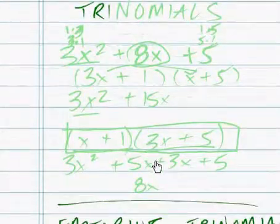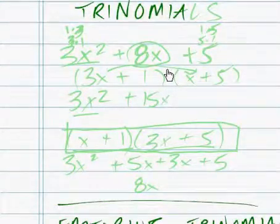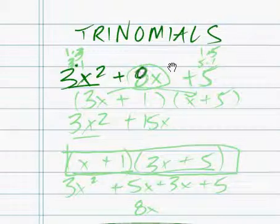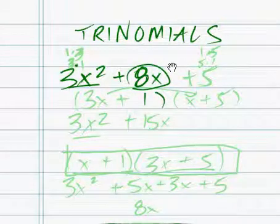About trinomials and how to solve them. Let's go with 3x squared plus 8x plus 5. Now what we're looking for is the factoring.